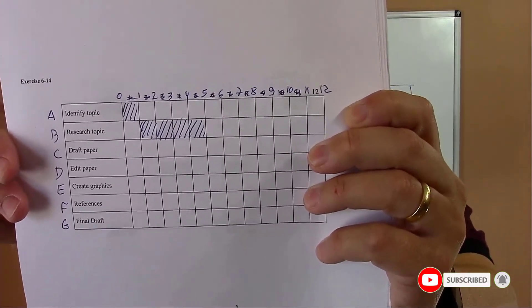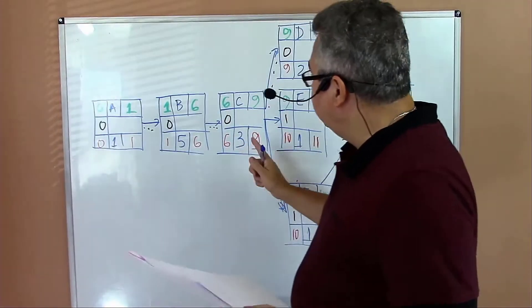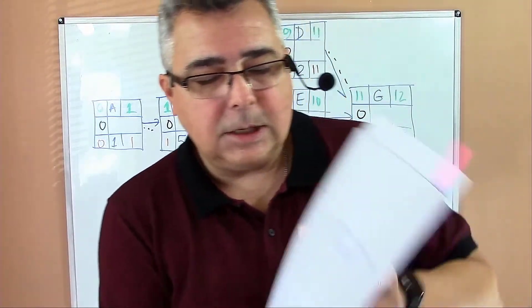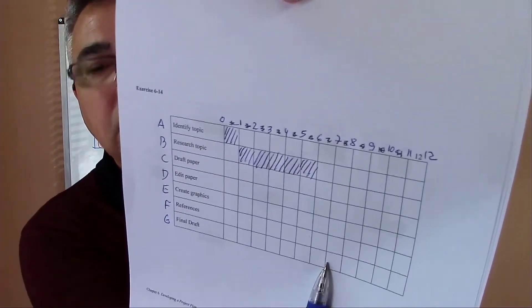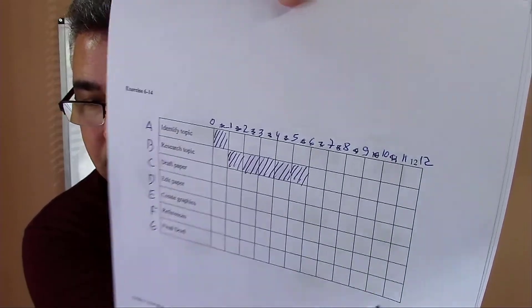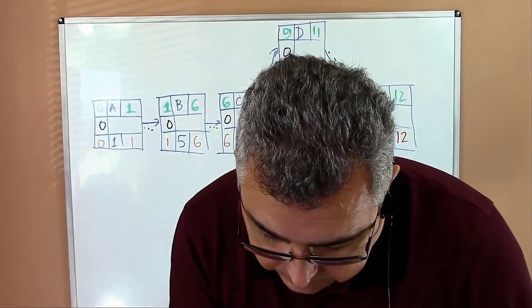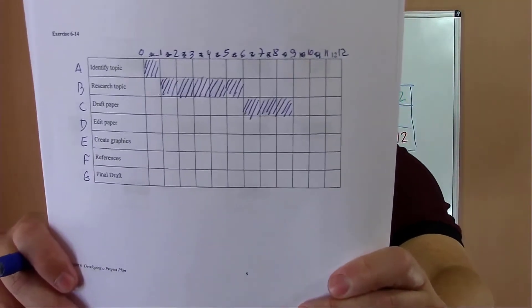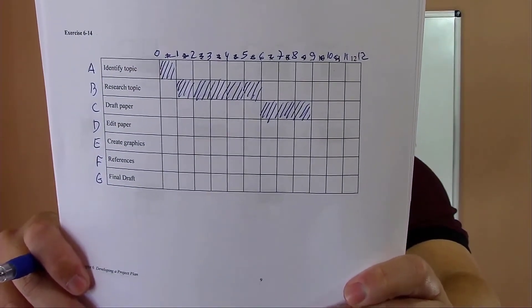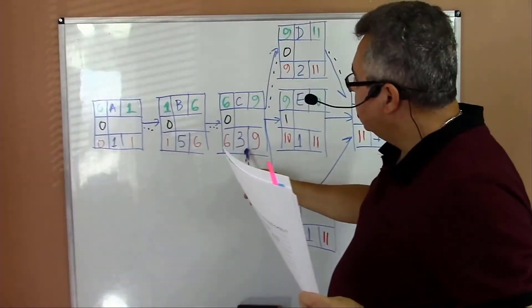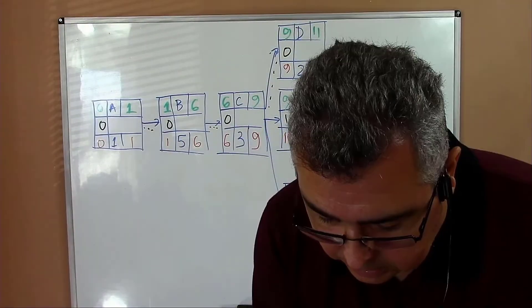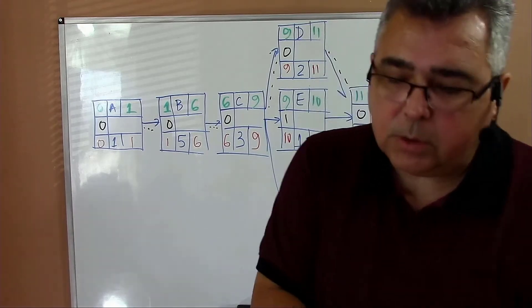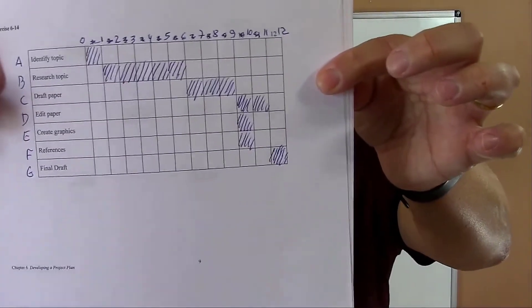Activity C starts on six, duration three days, up to nine. So start on six, finish on nine. Then we have activity G from eleven to twelve. That is the Gantt chart.